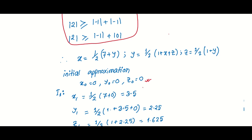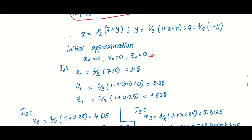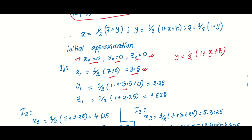First iteration: starting from x equals 0, y equals 0, z equals 0. Using the formulas, x1 is calculated first. Then y1 is equal to half of 1 plus x plus z, giving us 3.5. The first iteration values are computed.